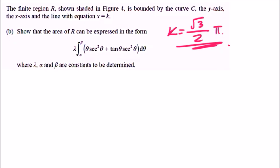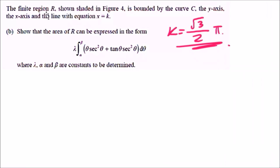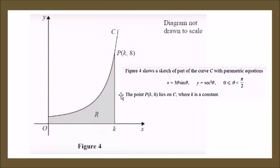Part A is done. Now for Part B: the region R shown shaded in Figure 4 is bounded by curve C, the y-axis, the x-axis, and the line x equals k. We need to show that the area of R can be written in a specific form entirely in θ. Since this is a graph of x and y, the area is always in the form: the integral from a to b of y dx.